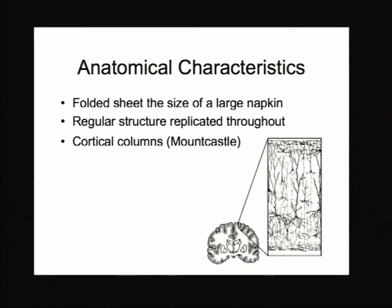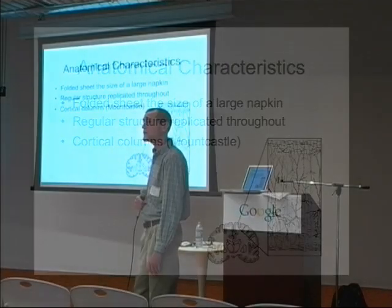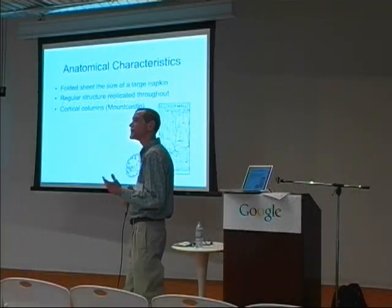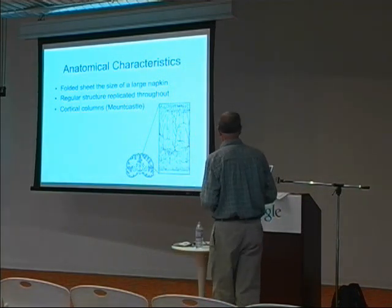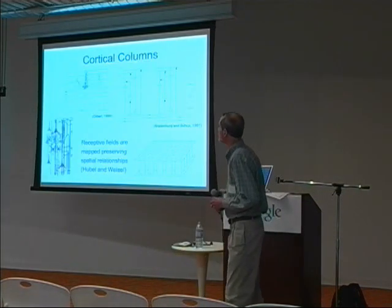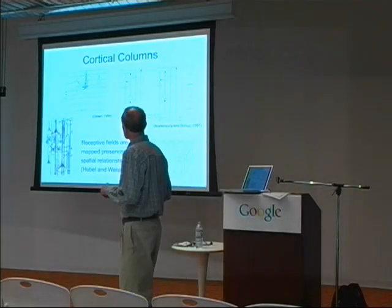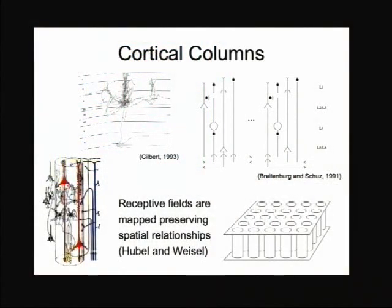One of the things that was early on discovered is that the neocortex has a very regular structure throughout, both in a hierarchical sense and in terms of there being modular components. These were first identified at the anatomical level by Vernon Mountcastle and some of his colleagues back in the 90s. They referred to these as cortical columns, and invented a whole slew of columnar-type structures. If you look at the cortex from the side, you'll see that it's striated in a number of levels.